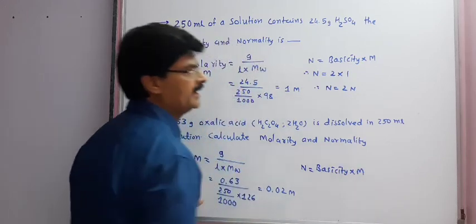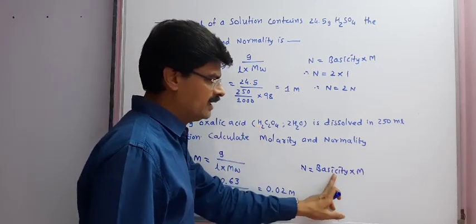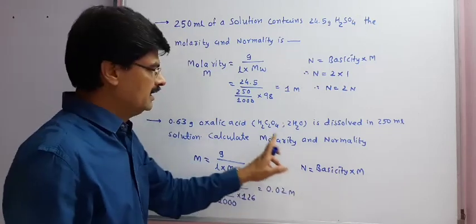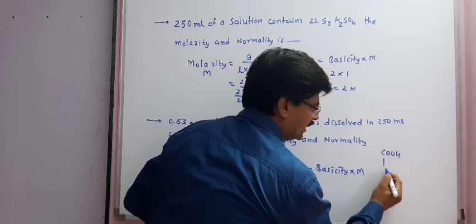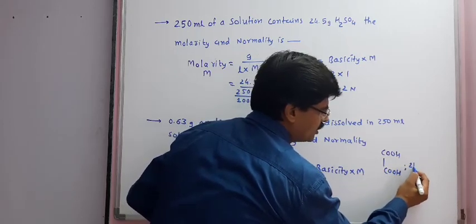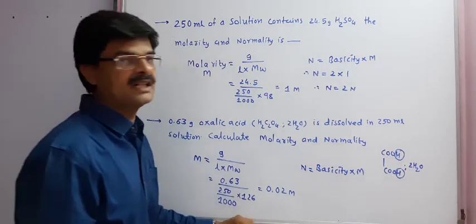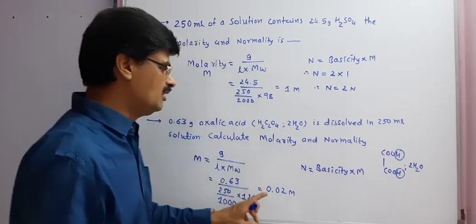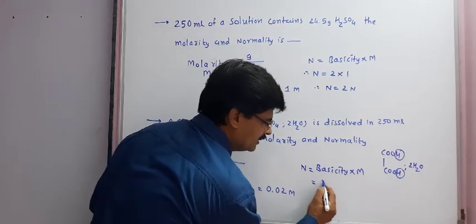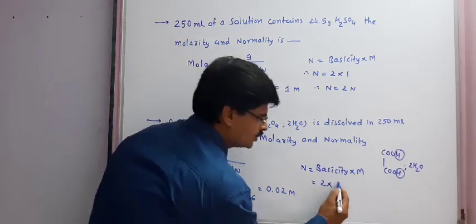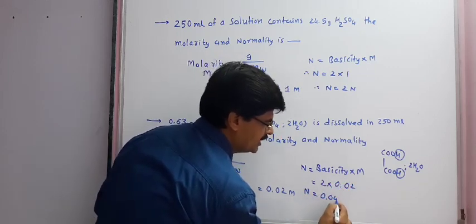In the next question: 0.63 gram oxalic acid (H₂C₂O₄·2H₂O, molar mass 126 gram/mole) dissolved in 50 ml solution. Find molarity and normality. Molarity equals 0.63 divided by (250 ml/1000) into 126, giving 0.02 molar. Normality equals basicity into molarity. In H₂C₂O₄ both hydrogens are replaceable, so basicity is 2. Normality equals 2 into 0.02 equals 0.04 normal.